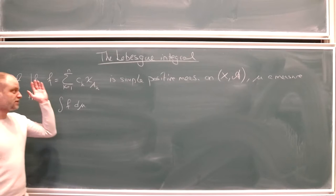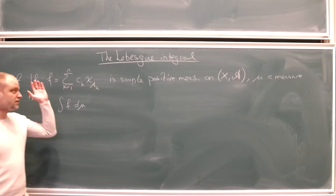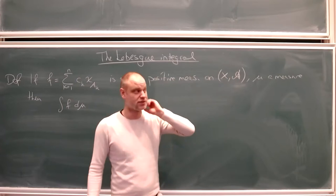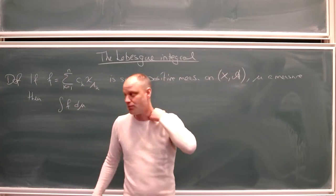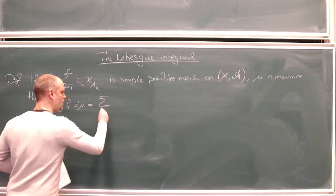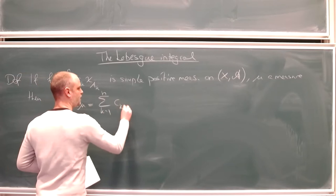If f is a simple function, so then it has this form — positive measurable on some measurable space (X, A), where A is the sigma algebra and X is the set — then the integral of f is going to be the sum, k goes from 1 to n, of c_k times mu of A_k.